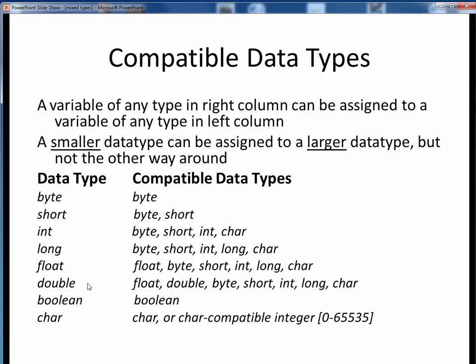A double is the largest data type, so we can assign to it any of the smaller numeric data types — any integer data type, a float, or even a char. However, note that we can only assign a boolean true or false value to a boolean data type, and only a char or a char-compatible integer value to a char.